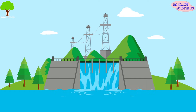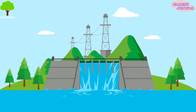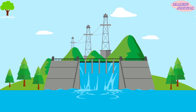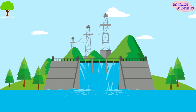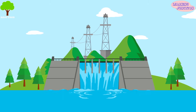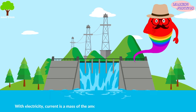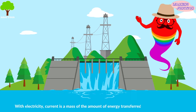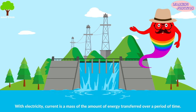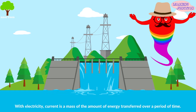Current with electricity is similar to the current when you think of a river. The river flows from one spot to another and the speed it moves is the speed of the current. With electricity, current is a measure of the amount of energy transferred over a period of time.